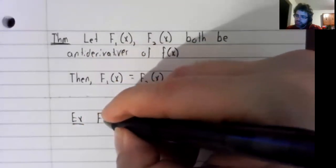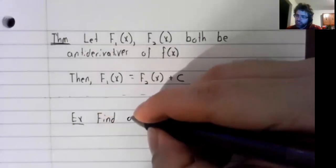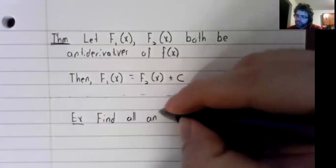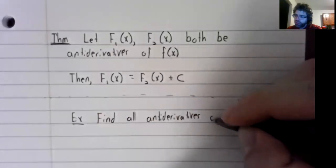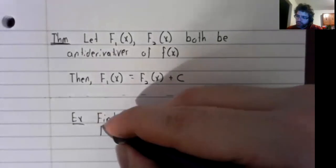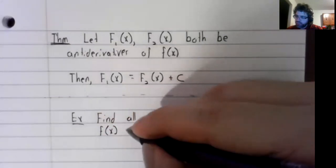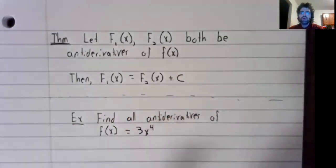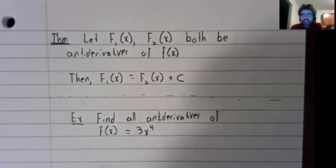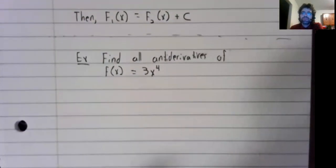let's find all antiderivatives of f of x equals 3x to the fourth. And to solve this problem, we'll start by looking for an antiderivative.